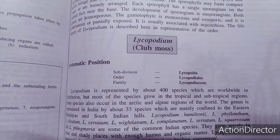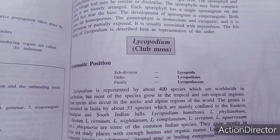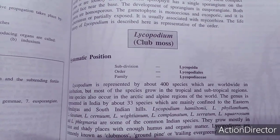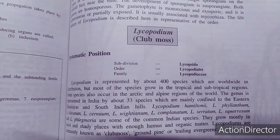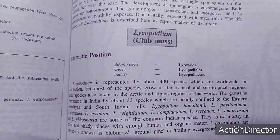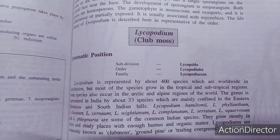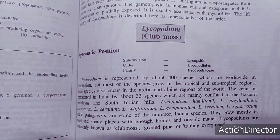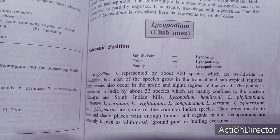Technically, Lycopodium is a small herbaceous or shrubby sporophyte. The sporangial shape is kidney-shaped. The stele is a protostele type — it may be plectostele, actinostele, or haplostele conditions. Lycopodium is represented by about 400 species which are worldwide in distribution.